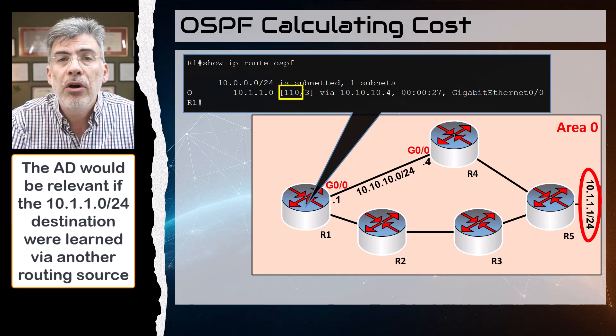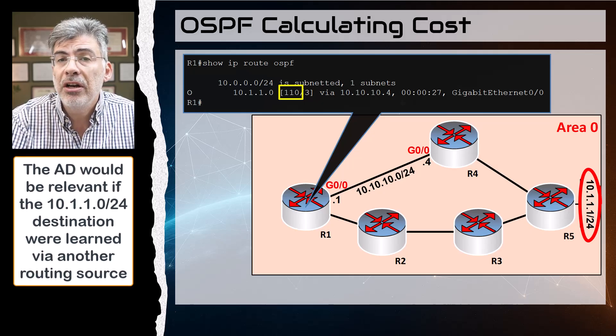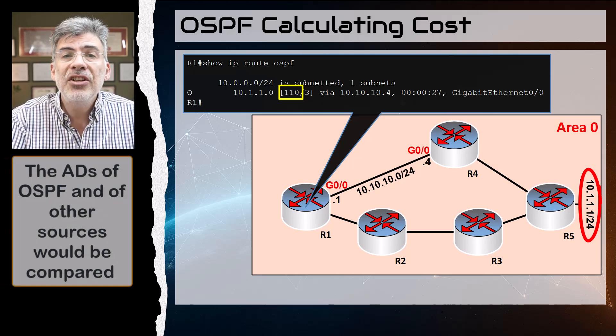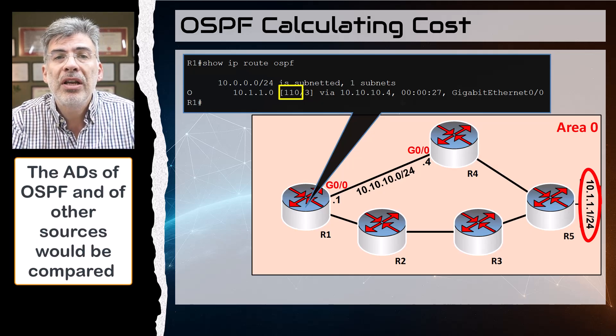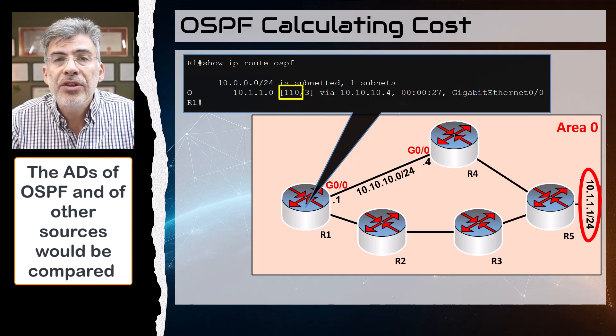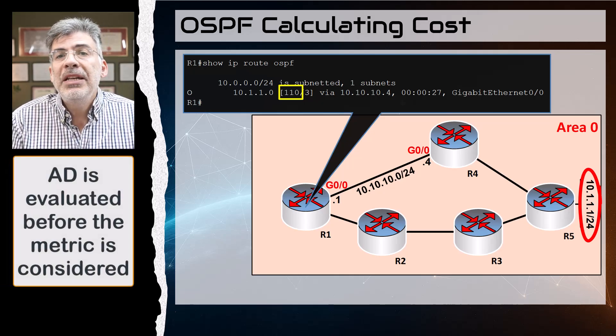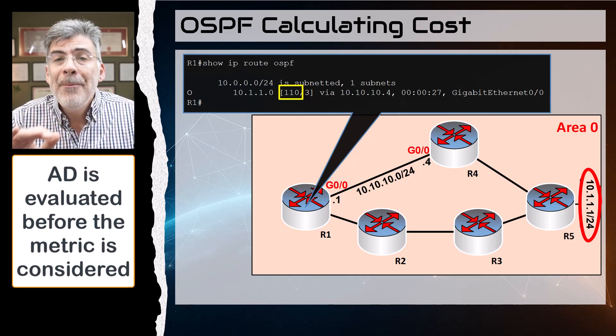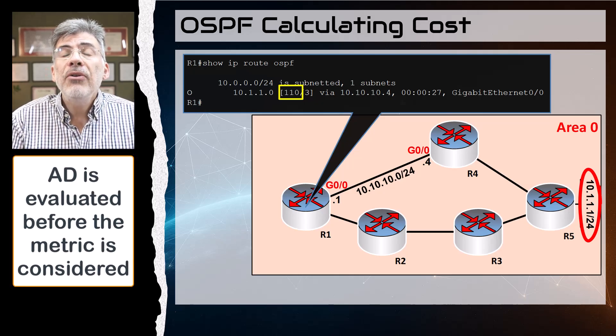This number would be relevant if the same destination was being advertised by other routing protocols as well, such as EIGRP. In that case, EIGRP and OSPF's administrative distances would be compared to determine which routing source should be used.